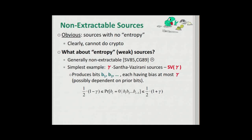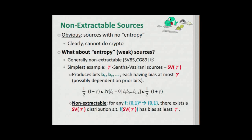Let me give you a very simple example. These are the Santha-Vazirani sources, parameterized by gamma. They output a sequence of bits where each bit has a bias of at most gamma, and the bias of each bit can depend on the outcome of all previous bits. It was shown by Santha-Vazirani that these sources are not extractable — namely, for any function that takes any number of coins and outputs a bit, there exists a Santha-Vazirani distribution such that the function applied to this distribution has bias at least gamma.